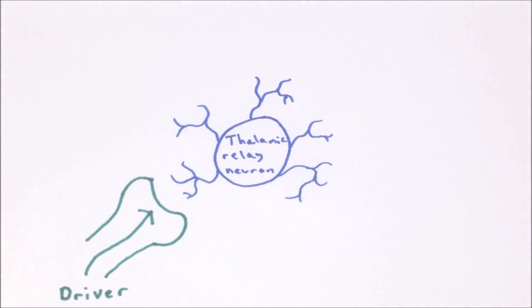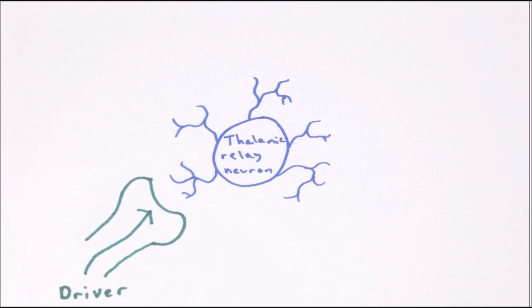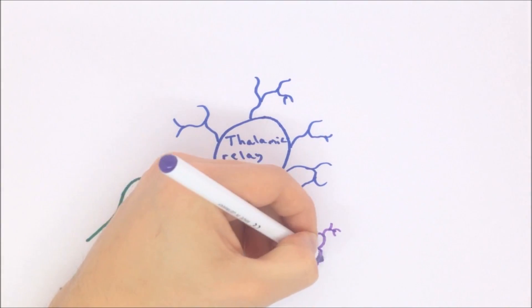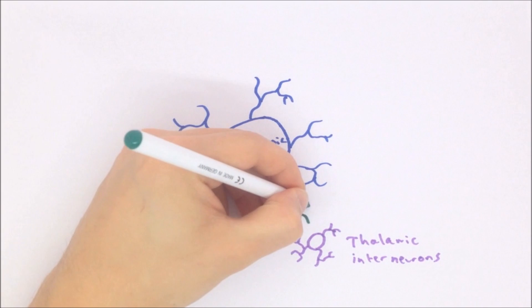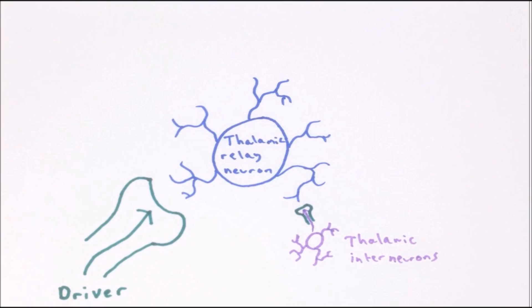The inputs to the thalamic nuclei can be split into drivers and modulators. Drivers are the inputs which actually represent the information being transmitted to the cortex; they form large glutamatergic synapses with the relay neurons. However, only about 10% of the synapses to relay cells are drivers. The other 90% are modulators, which are inputs from other brain areas that form smaller synapses and serve to modify the transmission of the drivers to the neocortex.